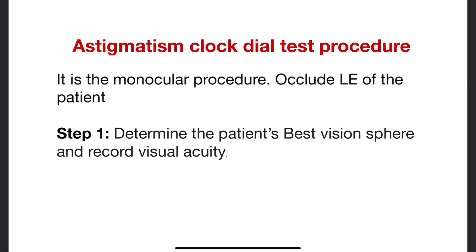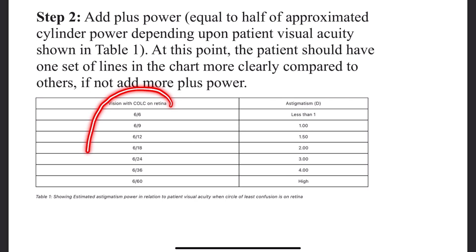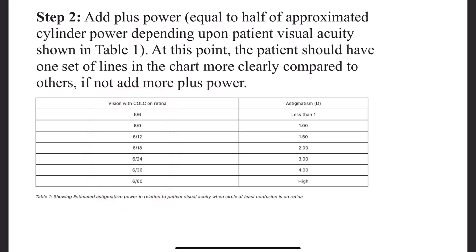Remember to do fogging for the hypermetropic patient. After finding the best vision sphere, you have to record the patient's visual acuity. With the best vision sphere, you're going to record the patient's visual acuity, and by this table you're going to estimate what is the refractive error of the patient.